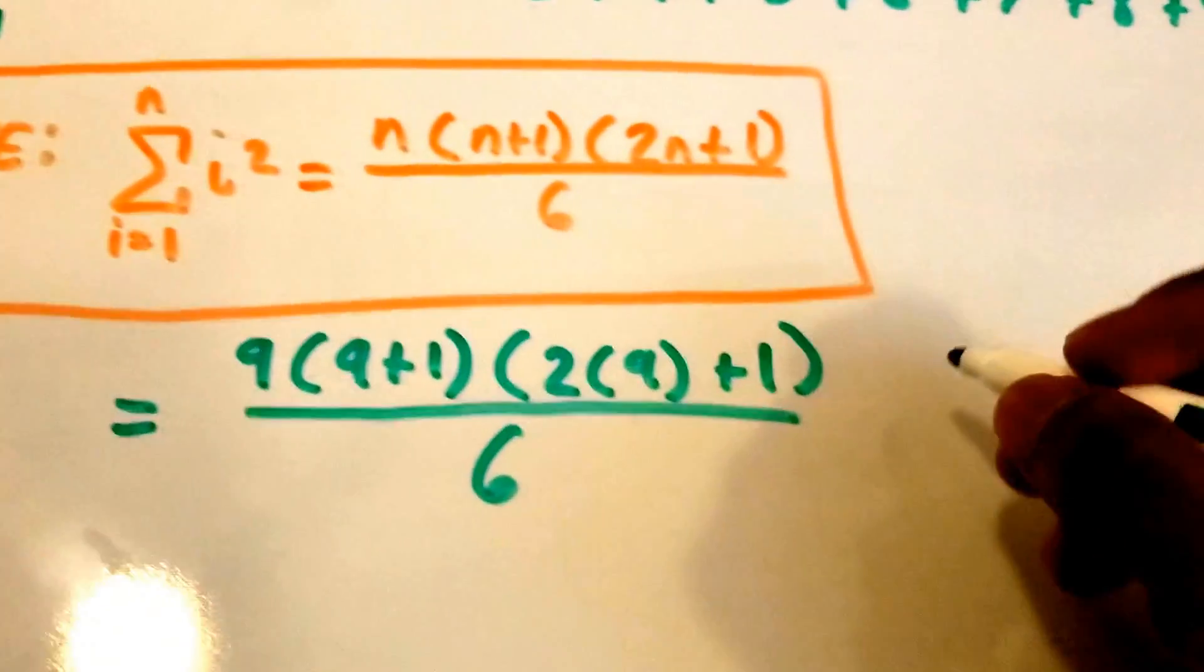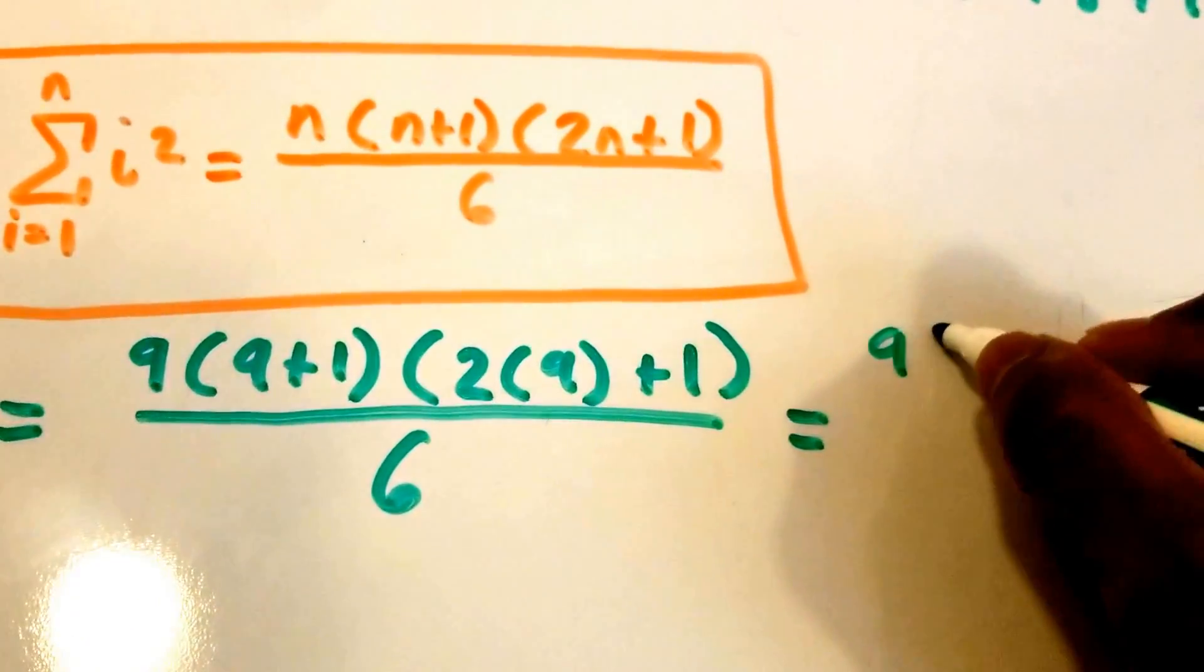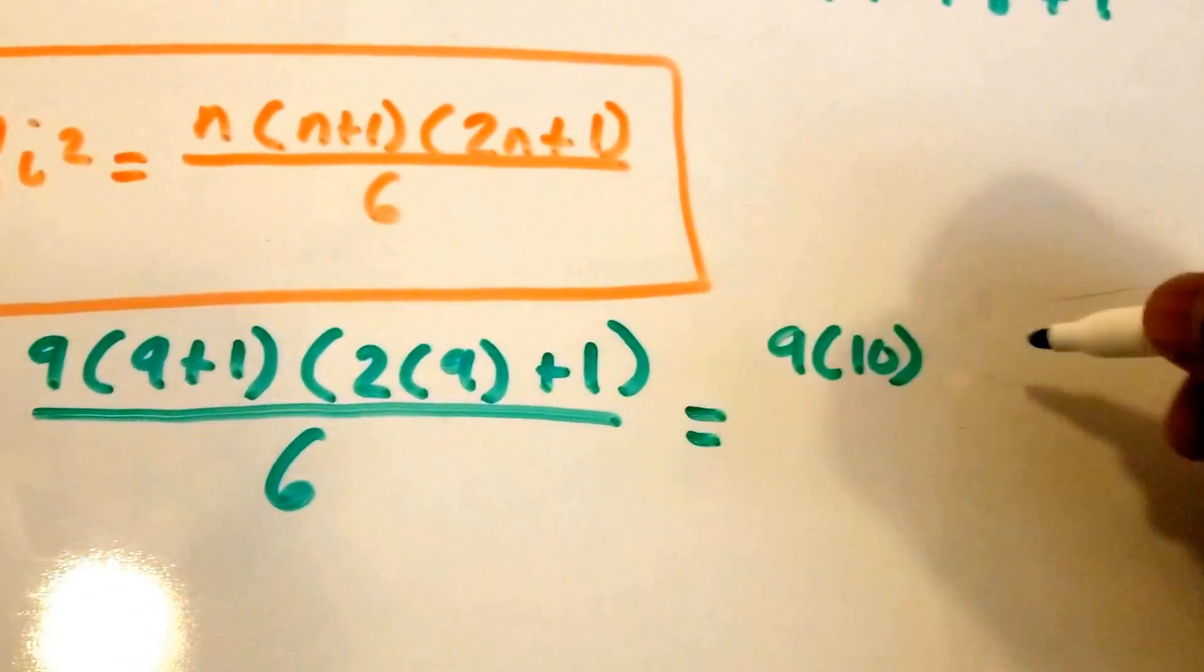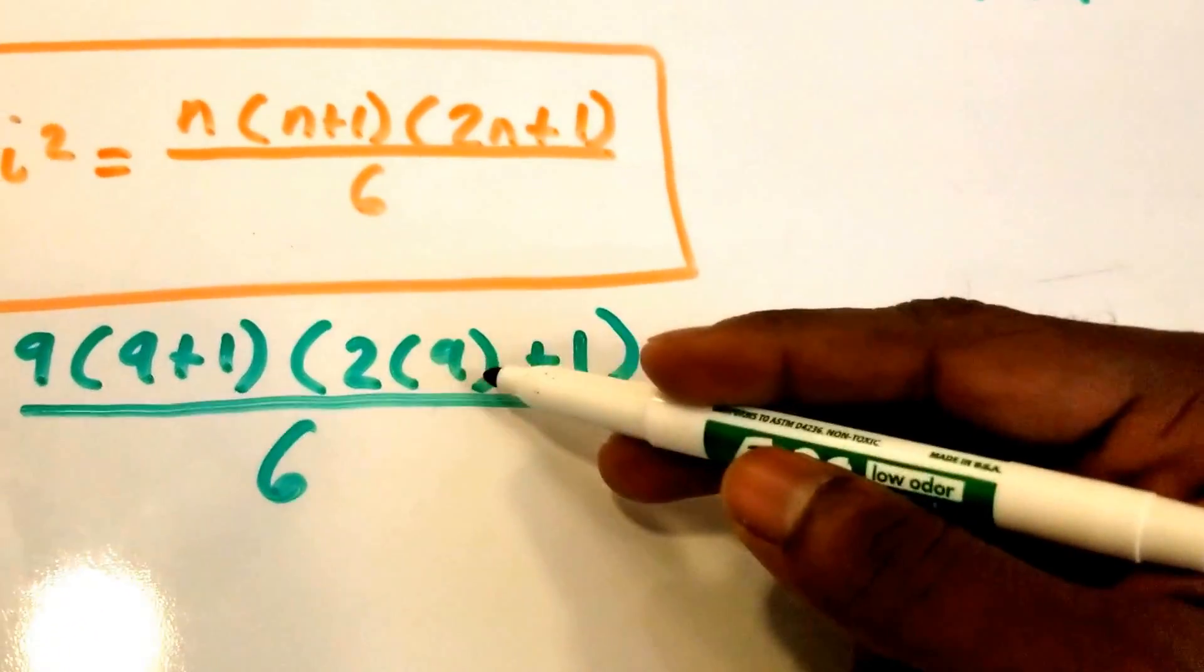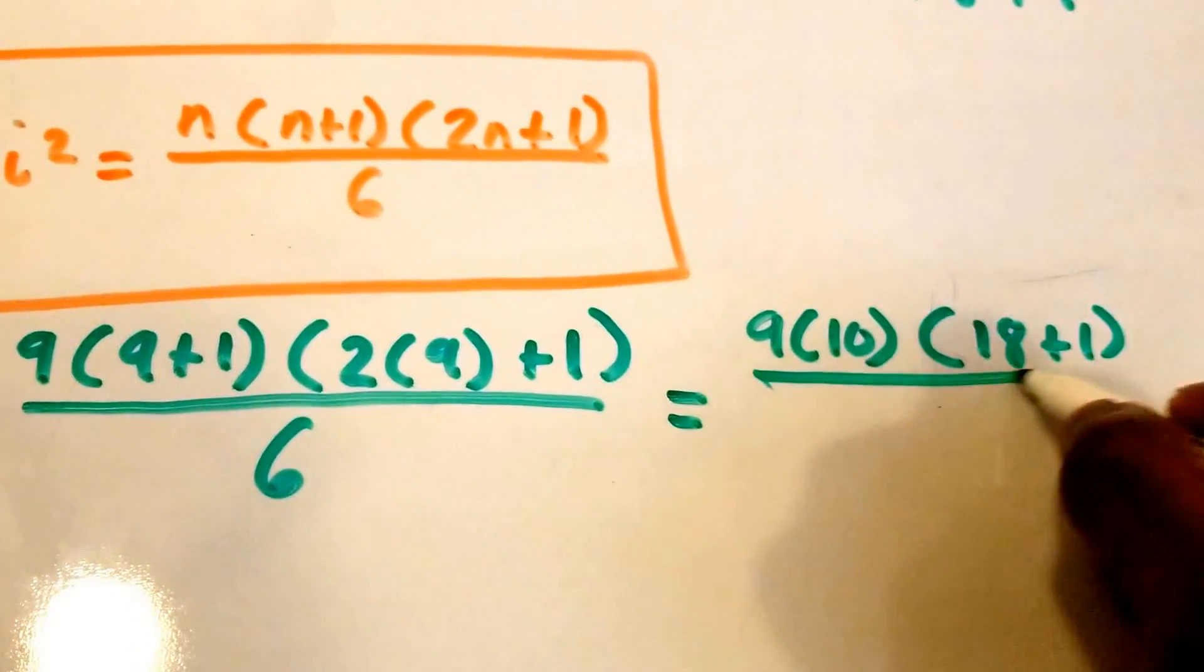Okay, now this is just equal to 9 times 9 plus 1, so that's 9 times 10, times 2 times 9 is 18, then we have plus 1, and all of that divided by 6.